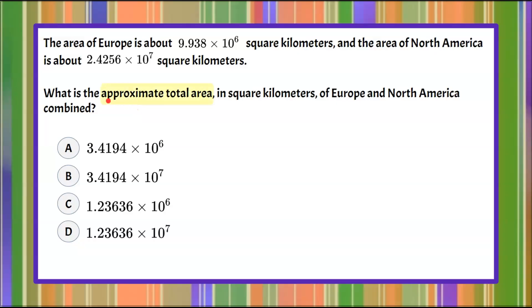To review, we're going to find the approximate total area of Europe and North America combined. They use the word 'approximate' because when we were given these scientific notation numbers, it said 'about.' Both of these measurements in square kilometers say 'about,' which is why they're saying approximate.